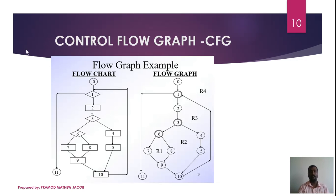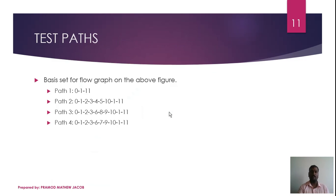Method 2: V(G) equals the number of predicate nodes in the graph plus 1. In this control flow graph, there are 3 predicate nodes — nodes 1, 3, and 6. So V(G) equals 3 plus 1, which equals 4 independent paths.